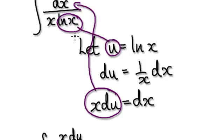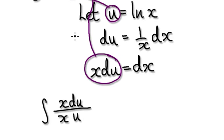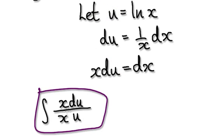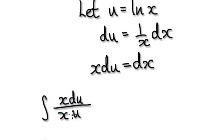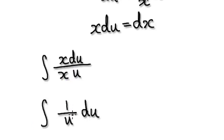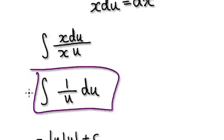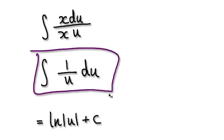So that would then take you to this, and then to here. These two would cancel out, giving you this. Now integrate this — it would then give you this.